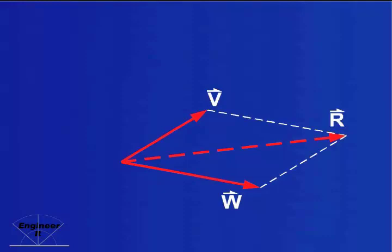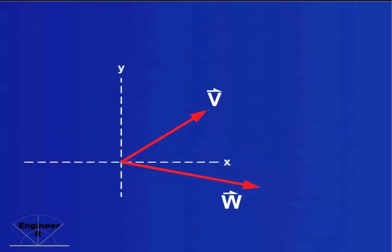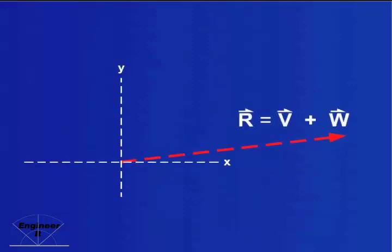The resultant vector R is equivalent to the sum of vector V plus vector W. It may replace vectors V and W without changing the effect on a body.